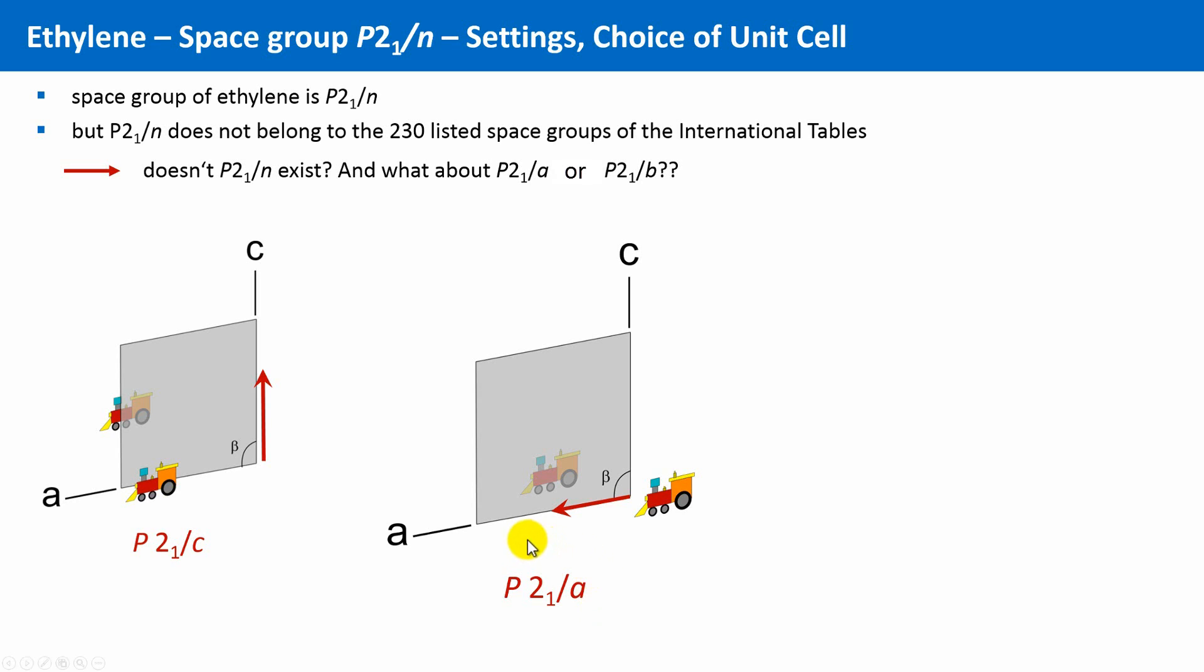Well, in this case, we only have to redefine the axis a and c. The old axis a becomes the new c direction, and the old axis c the new axis a. Marked here with these primes. That's it. The angle beta is still the same.